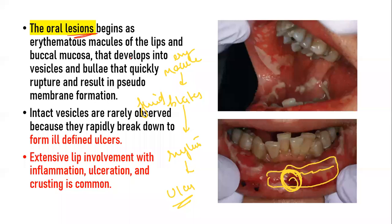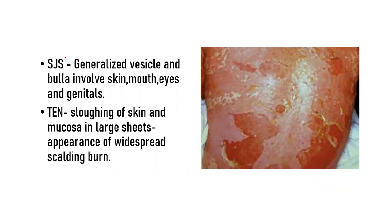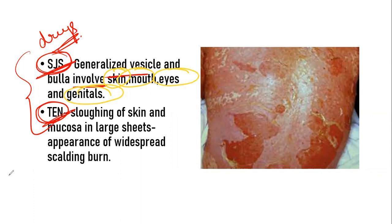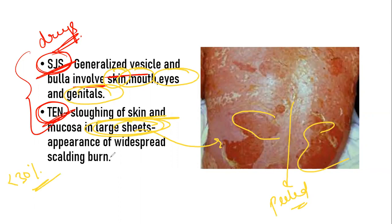Apart from Erythema Multiforme minor and major, the other forms are Stevens-Johnson Syndrome and Toxic Epidermal Necrolysis. In SJS and TEN, it is mainly precipitated by drugs. In SJS, there are generalized vesicles over the skin where there is involvement of not only skin and mouth but also the eyes and genitals. In Toxic Epidermal Necrolysis, more than 30% of the skin is involved, with sloughing of the skin and mucosa in large sheets, giving the appearance of a widespread scalding burn.